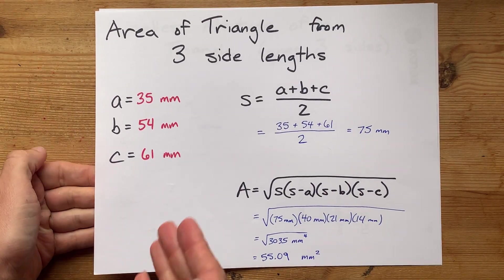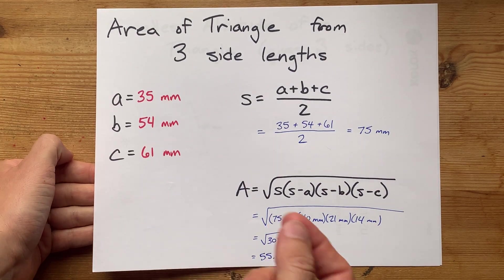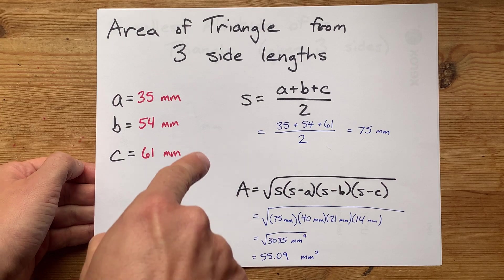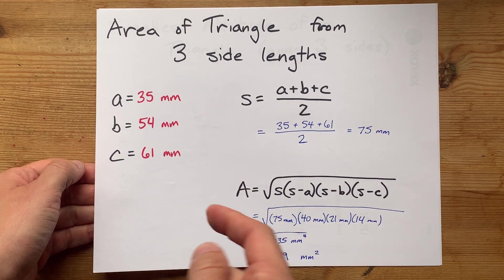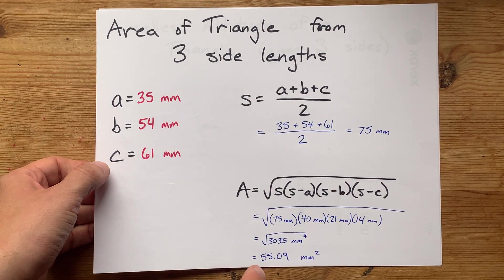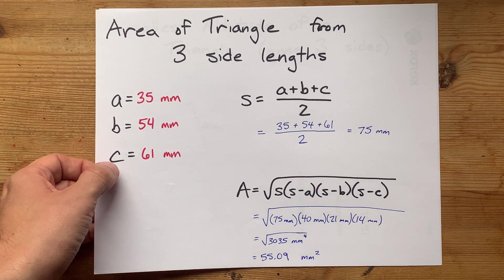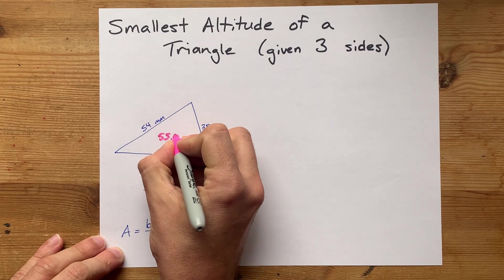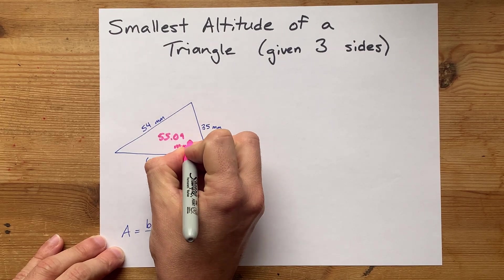Now I have another video where I've done the area of this exact triangle. We used Heron's formula, which itself uses the semi-perimeter of the triangle, and we found that the total area is 55.09 millimeters squared. I'm just going to write that here for ourselves so we can see it.